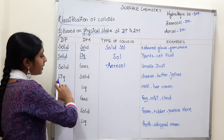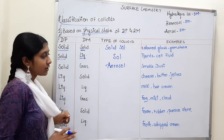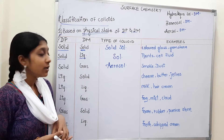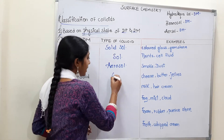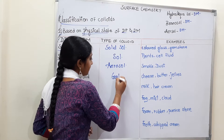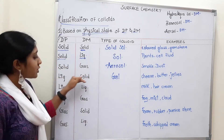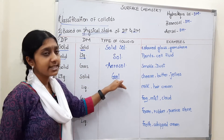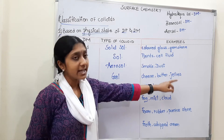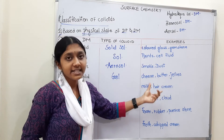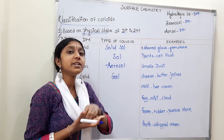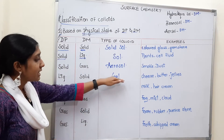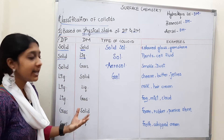Fourth type: liquid is the dispersed phase and solid is the dispersion medium. The type of colloid is called Gel. Examples include butter, jelly, and cheese.